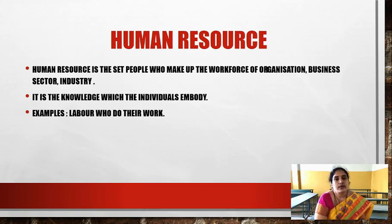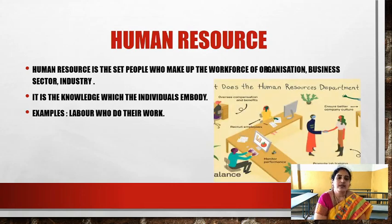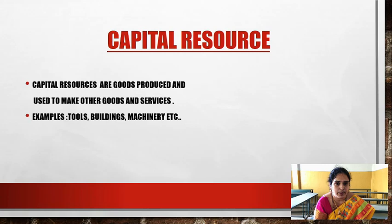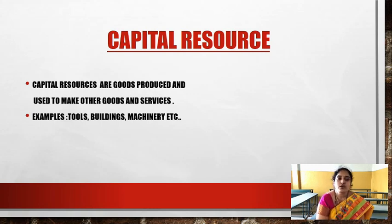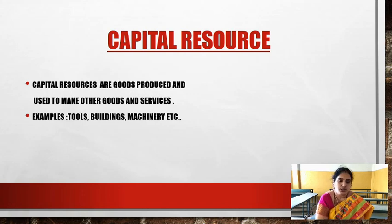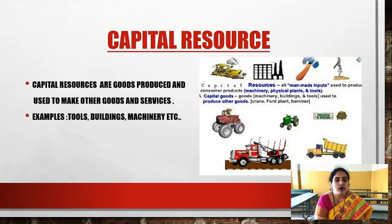Now what is a capital resource? Capital resources are goods produced and used to make other goods and services — machinery, land, buildings, and tools. For agricultural purposes we use land, and to plow the land we need machines like tractors. Capital resources are man-made inputs used to produce consumer goods — capital goods such as machinery, buildings, tools, cranes, and hammers are produced by man using scarce resources which have alternative uses. Thank you children, we will see in the next class again.